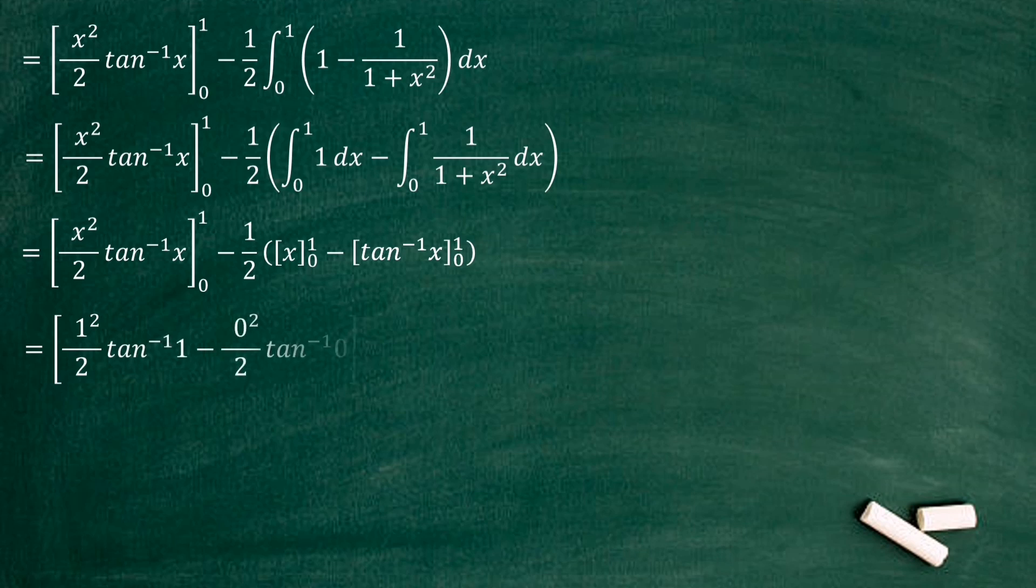Second one x value, upper limit 1 minus lower limit 0. Last one tan inverse x, upper limit 1 minus lower limit 0.